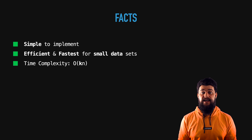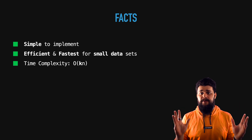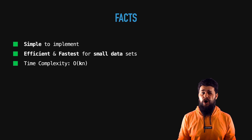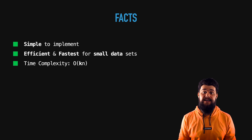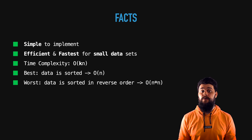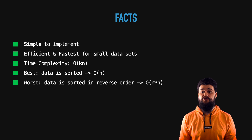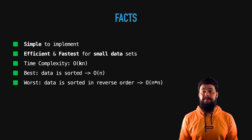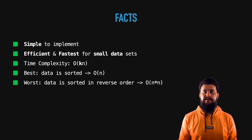Talking about time complexity: it's O(K × N), where K is a variable depending on the best or worst case scenario. The best case is when the entire array or slice is already sorted — the algorithm doesn't have to do too much. The worst case is when the data is sorted in reverse order, meaning it applies the maximum number of operations, which makes the algorithm slow for big data sets.